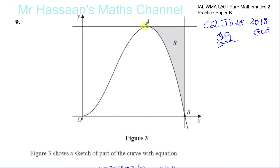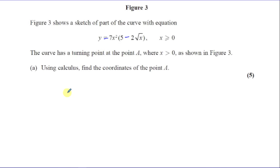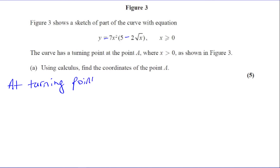So we've got to find the coordinates of the turning point A. We have the equation of the curve, and what we know is that at the turning point the gradient of the curve is zero.